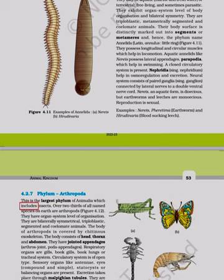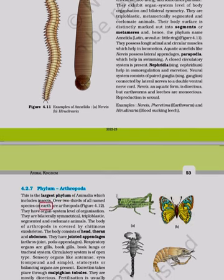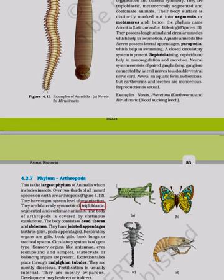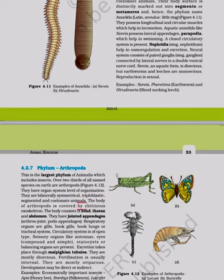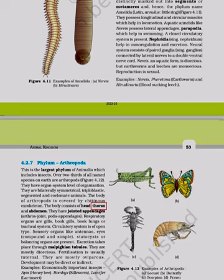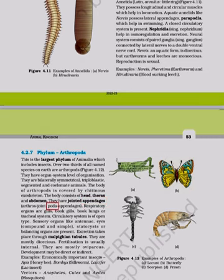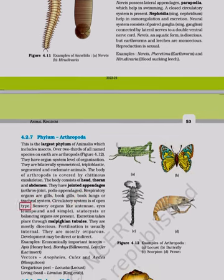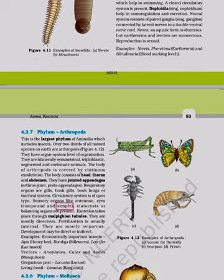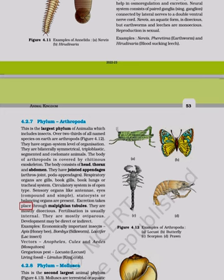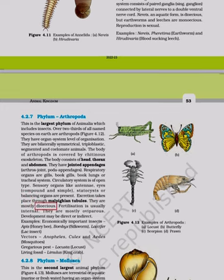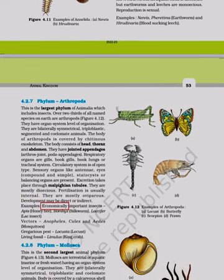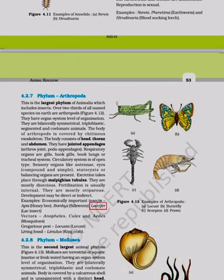Phylum Arthropoda: The largest phylum of Animalia — over two-thirds of all named species are arthropods. They have organ system level of organization, are bilaterally symmetrical, triploblastic, segmented, and coelomate. Body is covered by a chitinous exoskeleton divided into head, thorax, and abdomen with jointed appendages. Respiratory organs include gills, book gills, book lungs, or tracheal system. Circulatory system is open type. Sensory organs include antennae, compound and simple eyes, and statocysts. Excretion is through Malpighian tubules. Mostly dioecious with internal fertilization. Examples: Apis (honeybee), Bombyx (silkworm), Laccifer (lac insect), Locusts, Limulus (king crab).